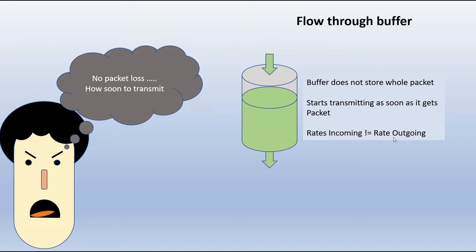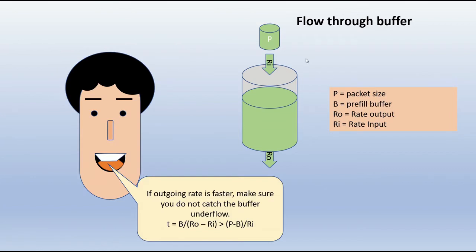He starts thinking about the problem and breaks it down into two parts: if the outgoing rate is faster than the incoming rate, and packets are coming in.